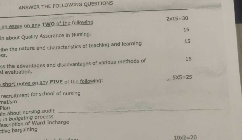The short notes questions are: Question 4 — staff recruitment for school of nursing; Question 5 — pragmatism; Question 6 — unit plan; Question 7 — explain about nursing audit; Question 8 — steps in budgeting process; Question 9 — job description of ward in charge; Question 10 — collective bargaining. You have been given 7 questions; answer only 5. 5 into 5 equals 25 marks.